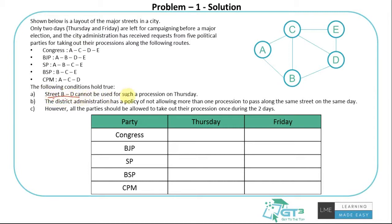Street BD cannot be used for such a procession on Thursday. So look at which party needs BD. There's only one party which needs BD: that is BJP. So BJP cannot do it on Thursday. Why? Because street BD cannot be used for such a procession on Thursday. That means BJP is doing it on Friday. So AB-BD-DE is taken on Friday.